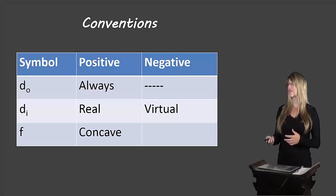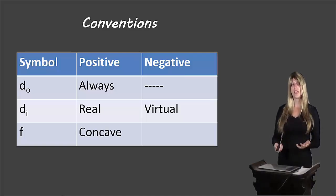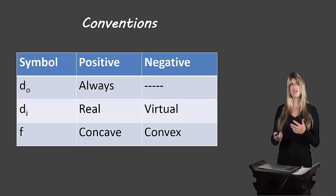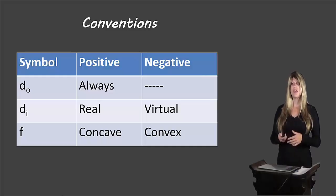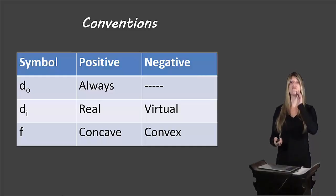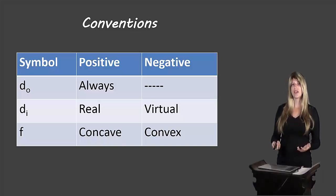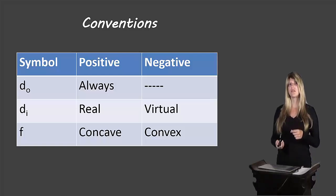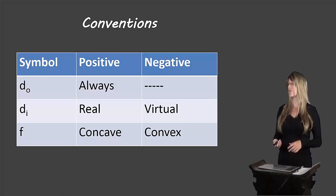Now let's look at the focal length. It will be positive for a concave mirror and negative for a convex mirror. Again, the focus can only actually be measured as a positive number, but we use a plus or minus sign to indicate whether it is concave or convex. So if we measure the focal length to be 3 cm and it's a convex mirror, we call it negative 3 cm — that negative tells us we are dealing with a convex mirror rather than a concave mirror.